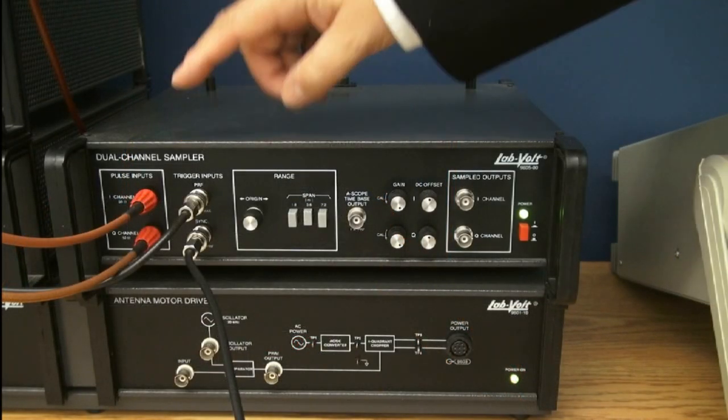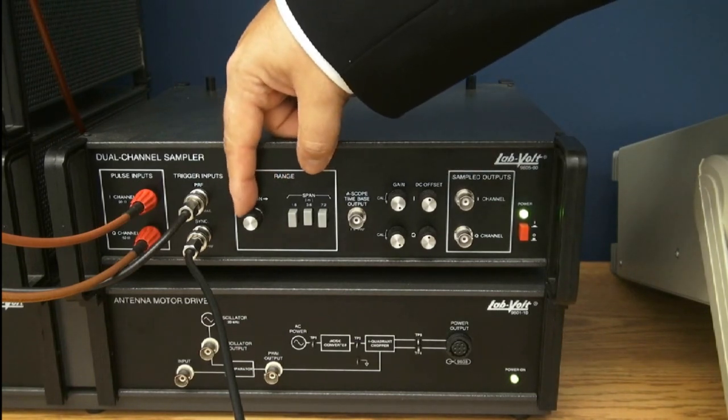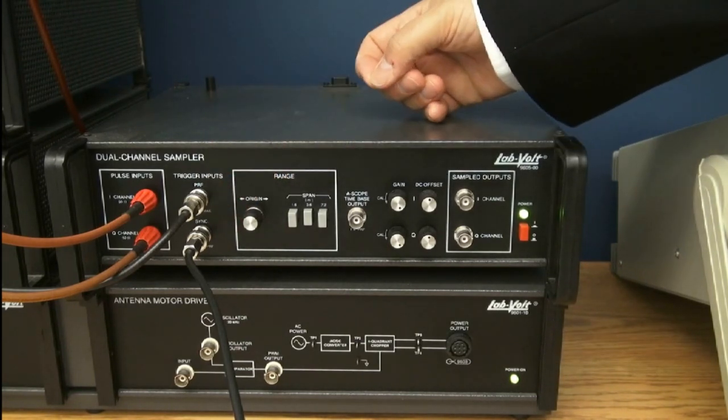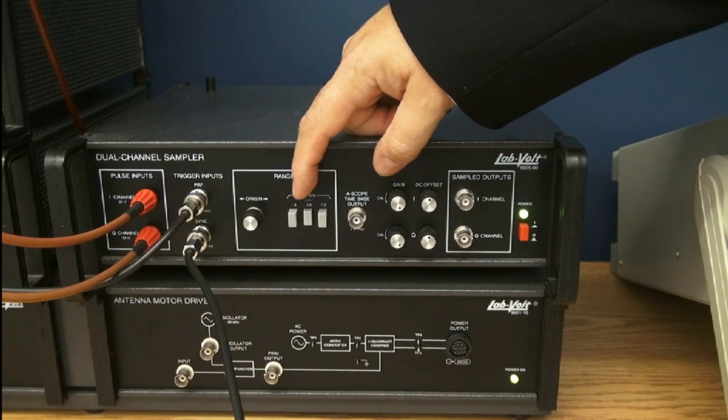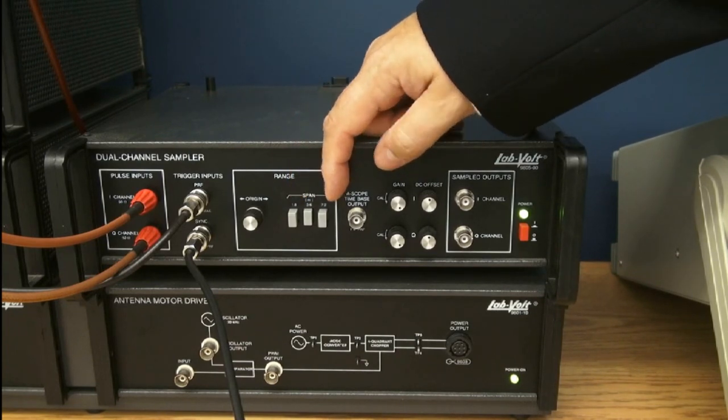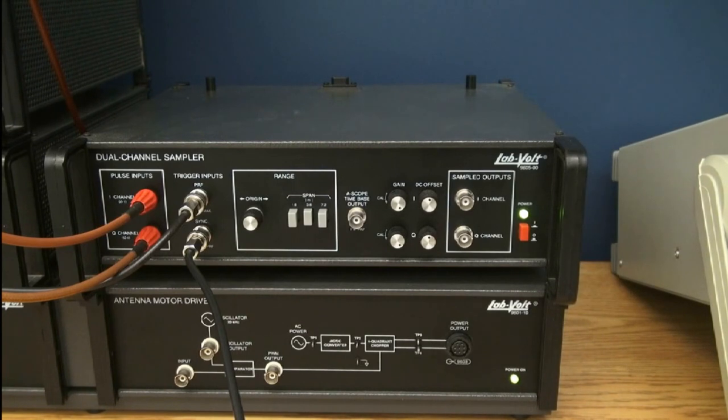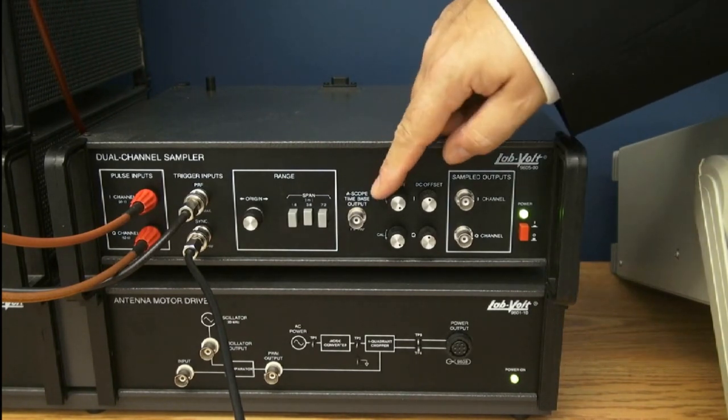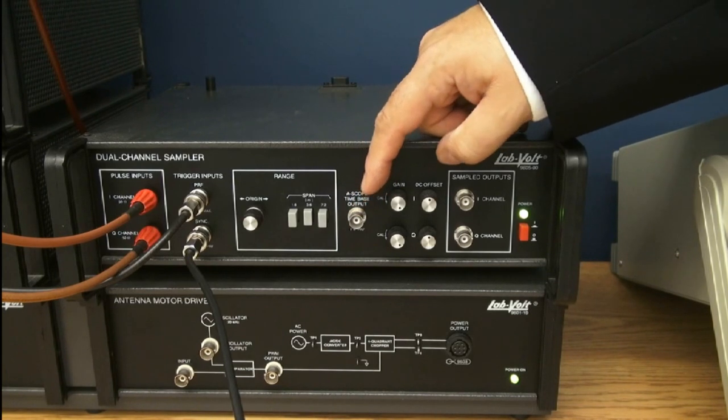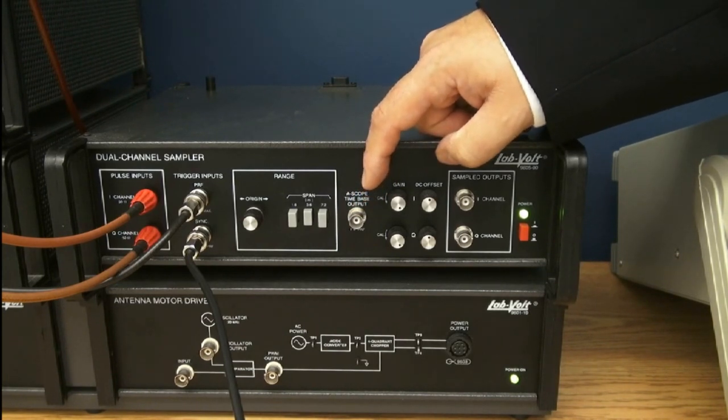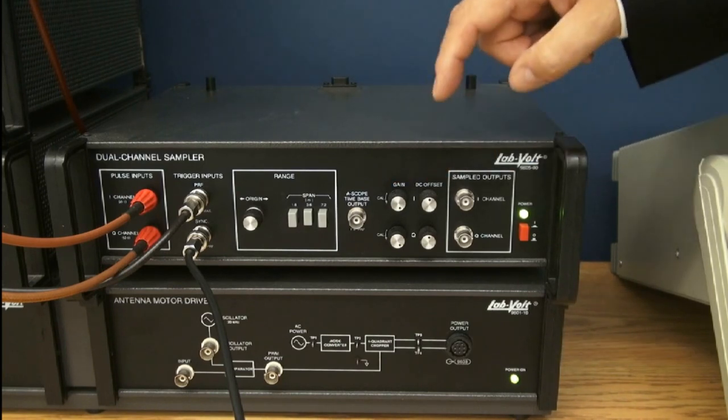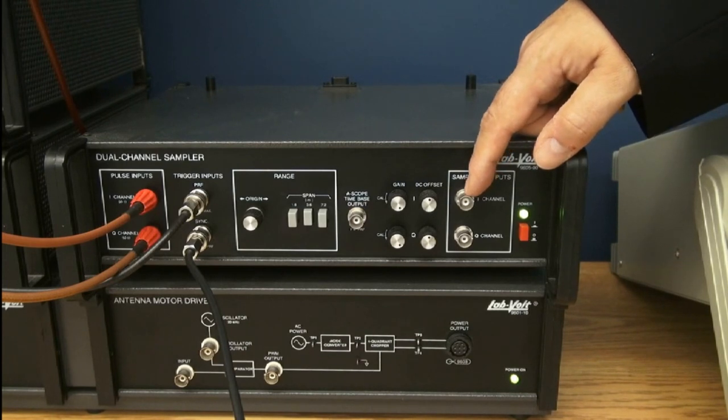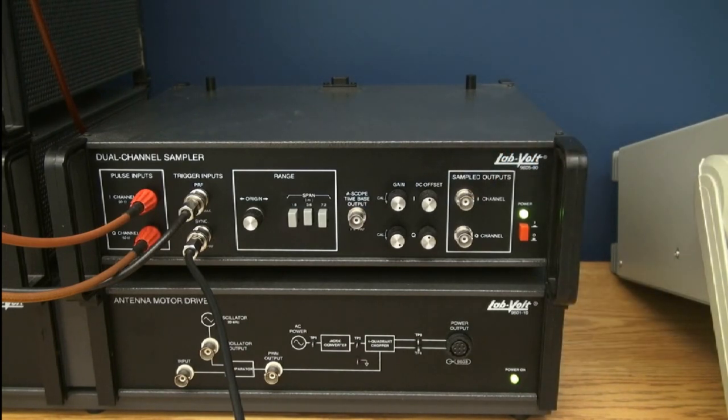The dual sampler has an origin compensation to compensate for the length of the cables going back and forth to the antenna. Also a span selection between 1.8 meters to 7.2 meters or roughly between 6 and 25 feet as your maximum range. It has an ASCOPE time-based output to be able to look at your signal on a regular oscilloscope. Gain adjustment and DC offset compensation adjustments. We then have the I and Q channel outputs that can be sent either to the oscilloscope or to a PPI display or to further processing.